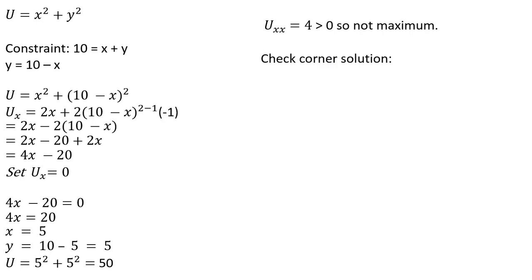So we need to check for a corner solution. From the constraint, set y equal to 0 and solve for x. If you do that, if y is 0, x is 10. Plug those results into our utility function, x of 10 and y of 0, and we get a utility of 100, which is much greater than what we found over here.